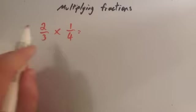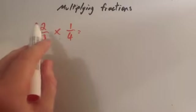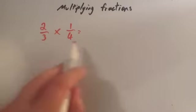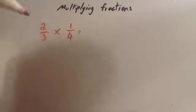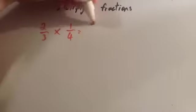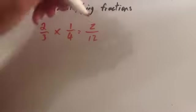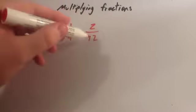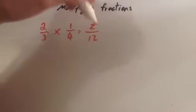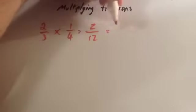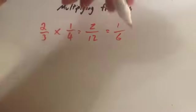To multiply fractions is really simple. You multiply the numerators — the top numbers — and you multiply the denominators — the bottom numbers. So two times one is two, and three times four is twelve. So the answer is two twelfths. Remember to cancel this down though, because these are both divisible by two. So your answer would be one over six, or one-sixth.